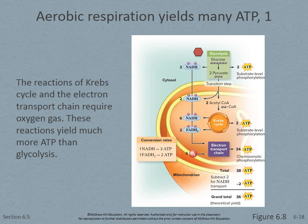Aerobic respiration yields many ATP. The reactions of the Krebs cycle and the electron transport chain require oxygen — they are the aerobic part of the process.